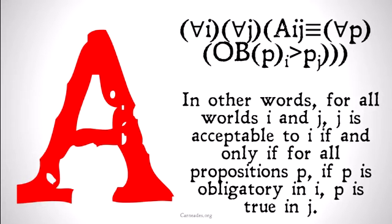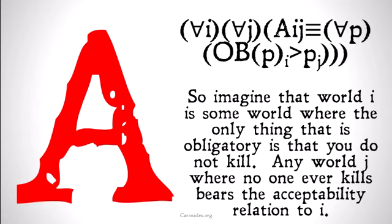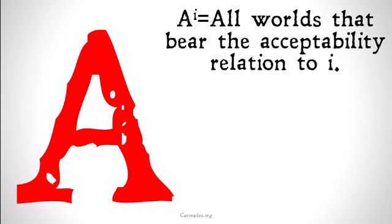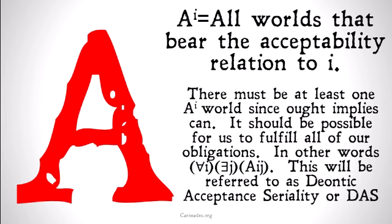J is a world where all of the obligations in world I are true if and only if J bears the acceptability relation to I. For example, imagine that world I is some world where the only thing that is obligatory is that you do not kill. Any world J where no one ever kills bears the acceptability relation to I, because all of the obligations in I were fulfilled in J. We simplify this by saying A^I is the set of all worlds that bear the acceptability relation to I.